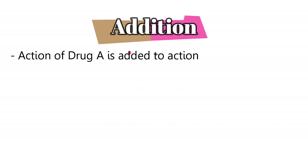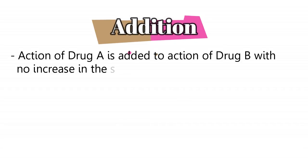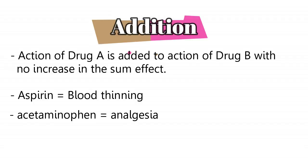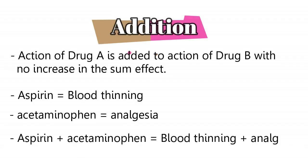First off we have addition. Addition basically means that the action of drug A is added to the action of drug B with no change in the total effect or no increase in the total effect. For example, aspirin can cause blood thinning and acetaminophen can cause analgesia. When you use aspirin and acetaminophen together, the effect is blood thinning plus analgesia — there is no new effect; each drug works independently.